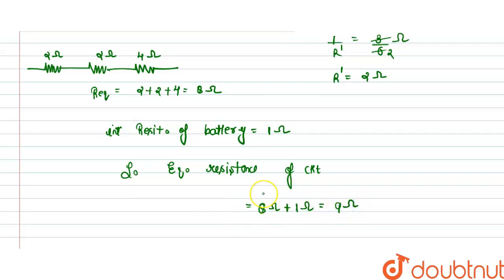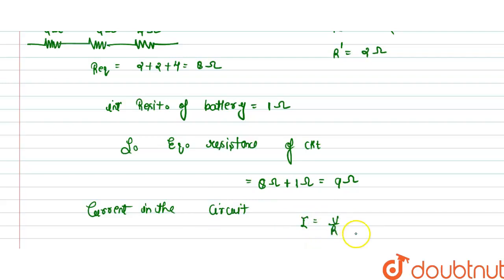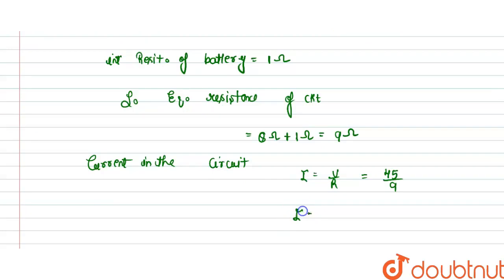We find the current in the circuit. According to Ohm's law, I = V/R. The voltage V is 45 and R is 9, so I = 45/9. We get I = 1/2 ampere, which equals 0.5 ampere.